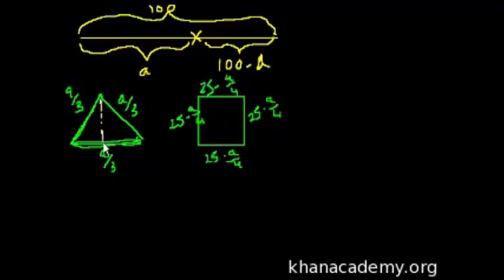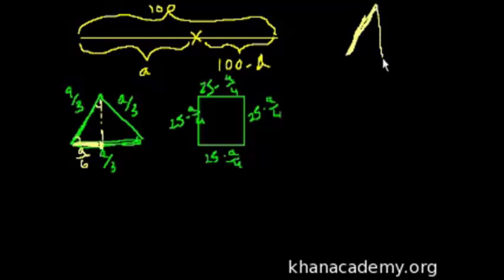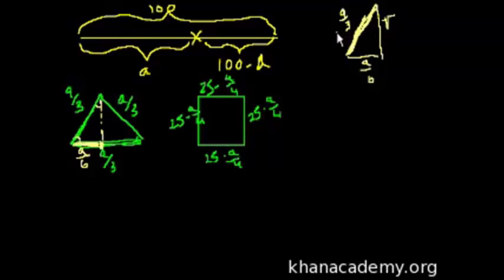What I do is draw a line down the middle - this half-length is a over 6, right? That's just the halfway point. The whole base is a over 3. And this is a 30-60-90 triangle - the angle is 30 here and 60 here. So the height is going to be square root of 3 times the base half. The height equals square root of 3 over 6 times a.